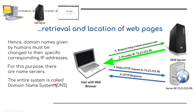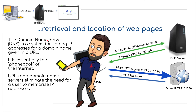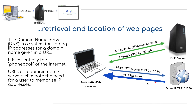The DNS is a system for finding IP addresses for a domain name given in a URL — essentially a phone book for the internet, but with IP addresses instead of phone numbers. So when I type in Amazon.com, the domain name server sends back the IP address for Amazon.com to my computer. URLs and domain name servers eliminate the need for users to memorize IP addresses, and the computer then uses that IP address to connect to the actual server hosting the website.